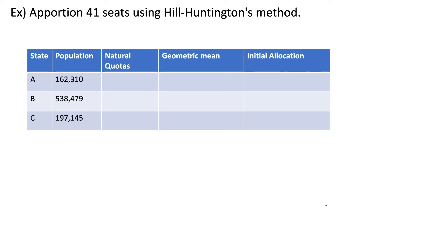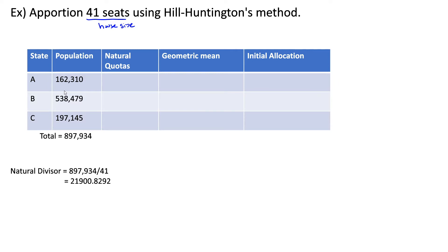Now let's look at an example where we actually apportion something using Hill-Huntington's method. We want to apportion 41 seats, so this is our house size. The first thing we need to do is find our total population by adding up all of the state populations. Then we find our natural divisor by dividing the total population by the house size. Next we find our natural state quotas by taking each state population and dividing it by the natural divisor, giving us the following natural state quotas.